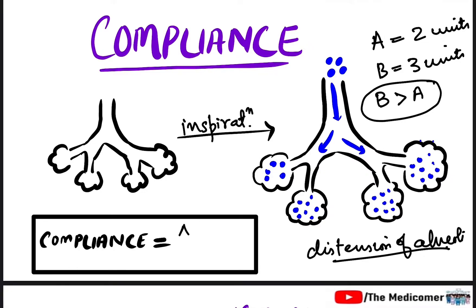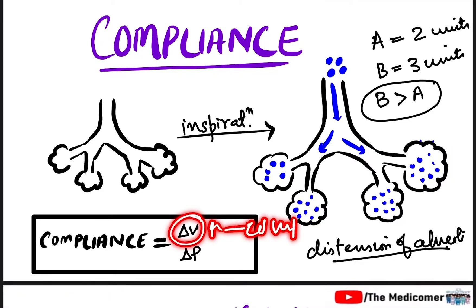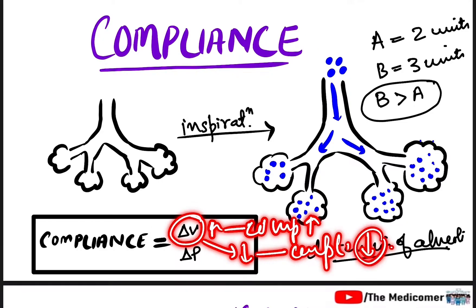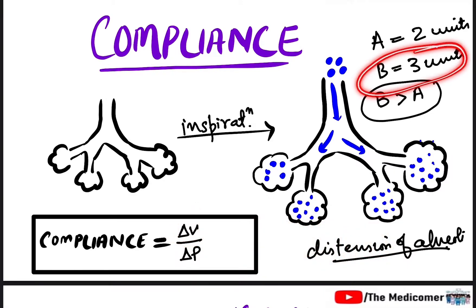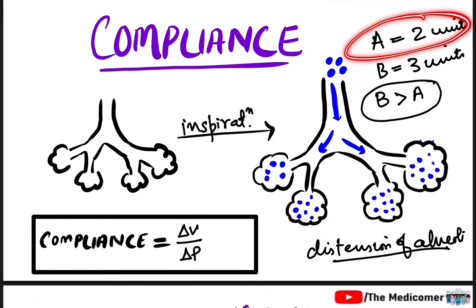Compliance is defined as ΔV divided by ΔP — that means on a unit change in pressure, what will be the change in volume of the lungs or alveoli. If the change in volume is more, compliance will be more; if the change in volume is less, compliance will be less. So in this example, compliance of B is more than compliance of A.